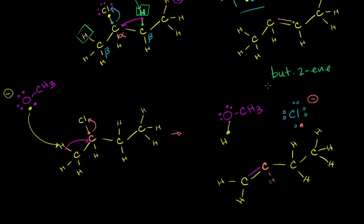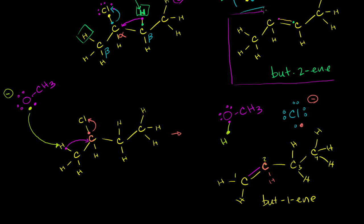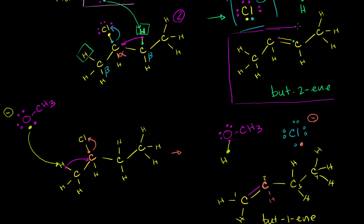So instead of forming bute-2-ene as we saw in the first video on E2 reactions, we now have — it's still 1, 2, 3, 4 carbons, so it's still 'bute' — but the double bond is on the 1 carbon. So we could call this bute-1-ene. The question is: which is more likely to happen? Does one happen disproportionately? And the answer is yes — bute-2-ene is the dominant product. If you were to analyze your reaction, the great majority of what you see is going to be the bute-2-ene, not the bute-1-ene.